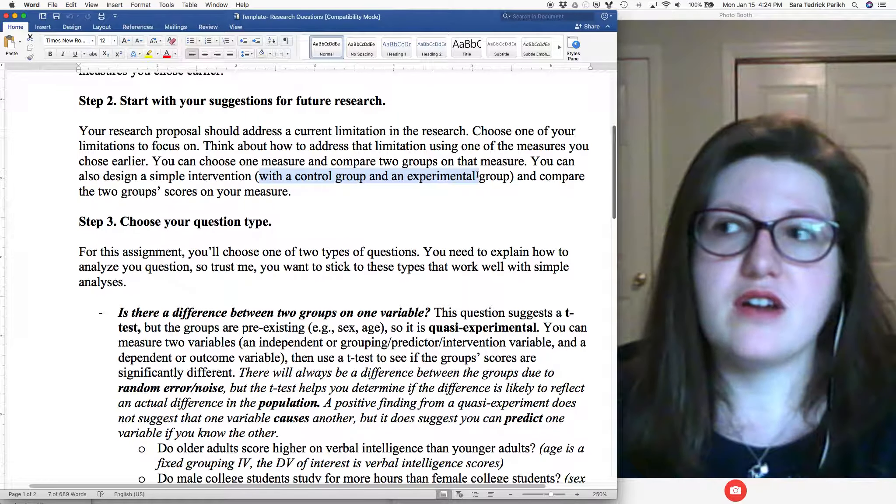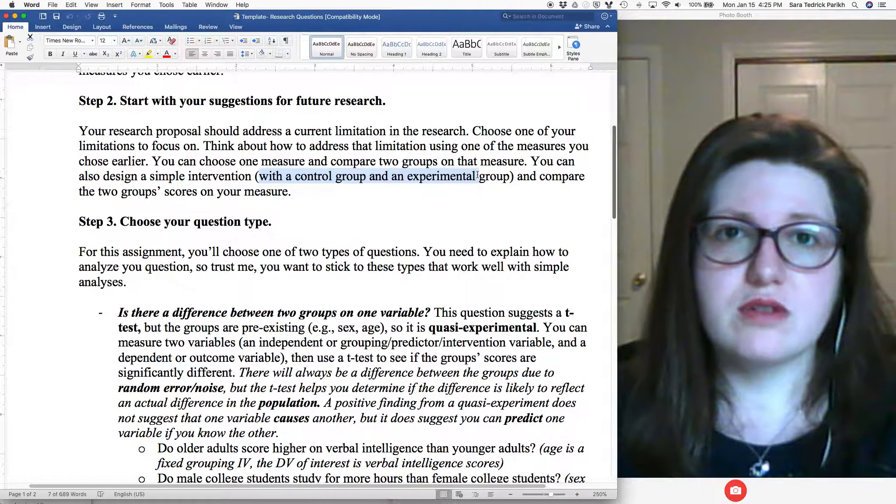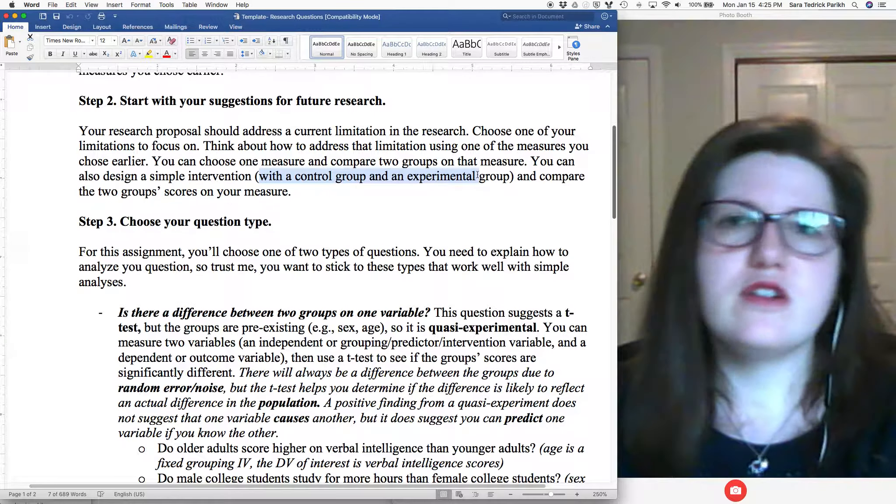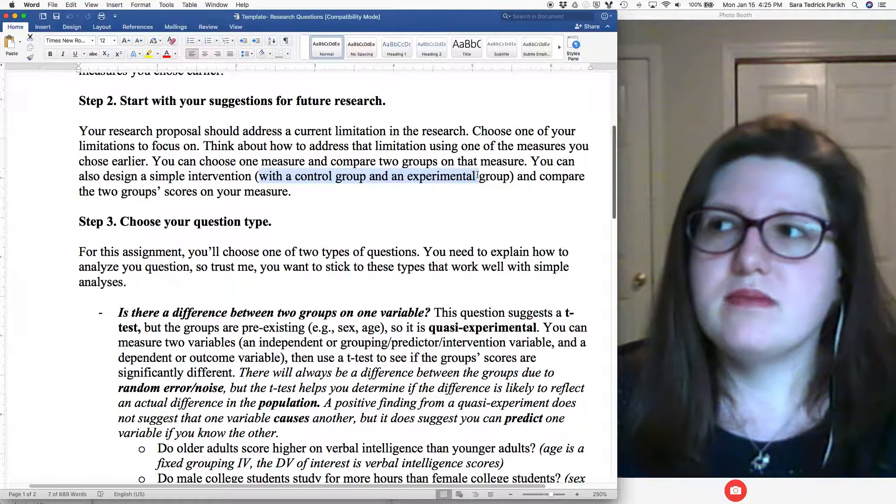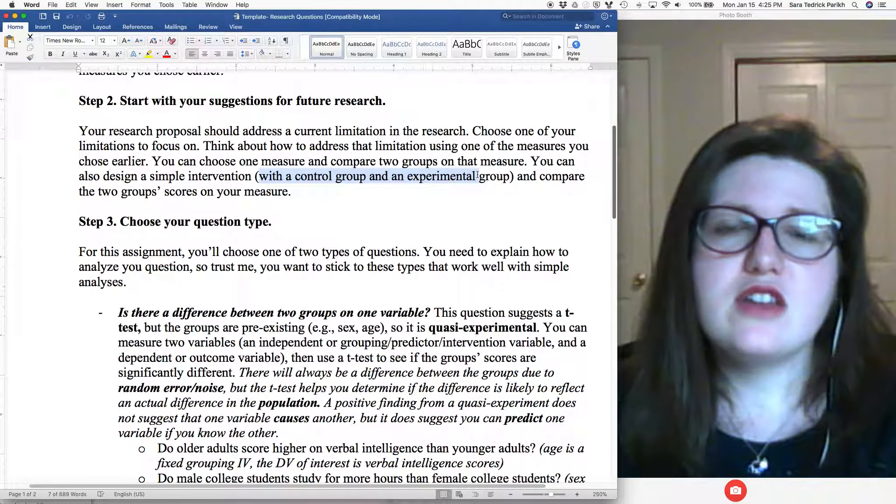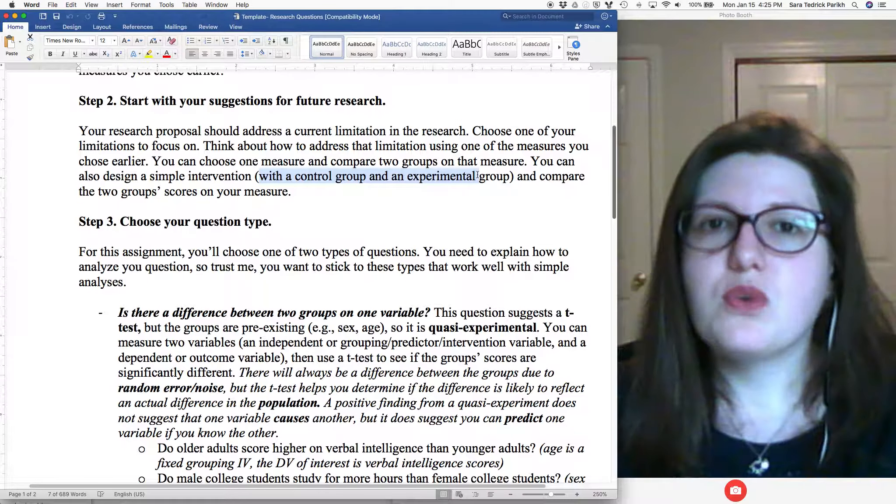So you do have some choices here. You can design an experimental study where you assign half the people to one group and half the people to the other, or you can do a quasi-experimental study, which is where you have two naturally occurring groups like men and women, boys and girls.